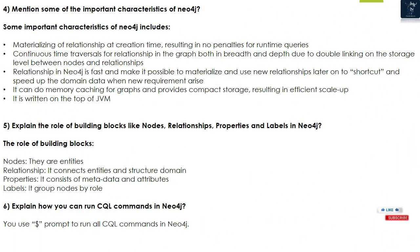Question 4: Mention some important characteristics of Neo4j. These include: materializing of relationships at creation time resulting in no penalties for runtime queries; constant time traversals for relationships in the graph both in breadth and depth due to double linking at the storage level between nodes and relationships; relationships are fast and allow materializing new relationships to shortcut and speed up domain data when new requirements arise; memory caching for graphs with compact storage resulting in efficient scale-up; and it is written on top of the JVM.